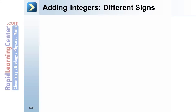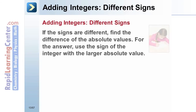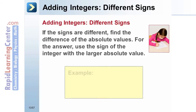Adding integers with different signs: if the signs are different, find the difference of the absolute values. For the answer, use the sign of the integer with the larger absolute value. Example: negative 4 plus 11 — negative 4 plus 11 equals 7.